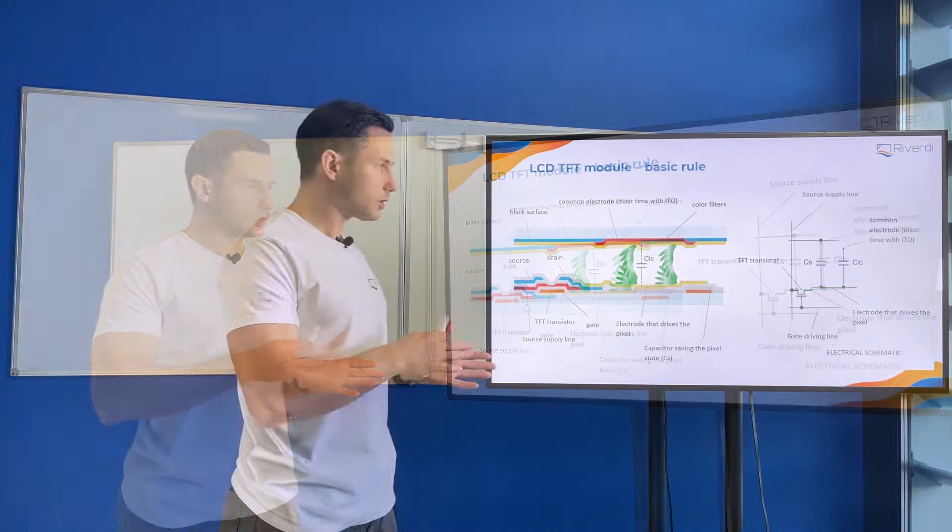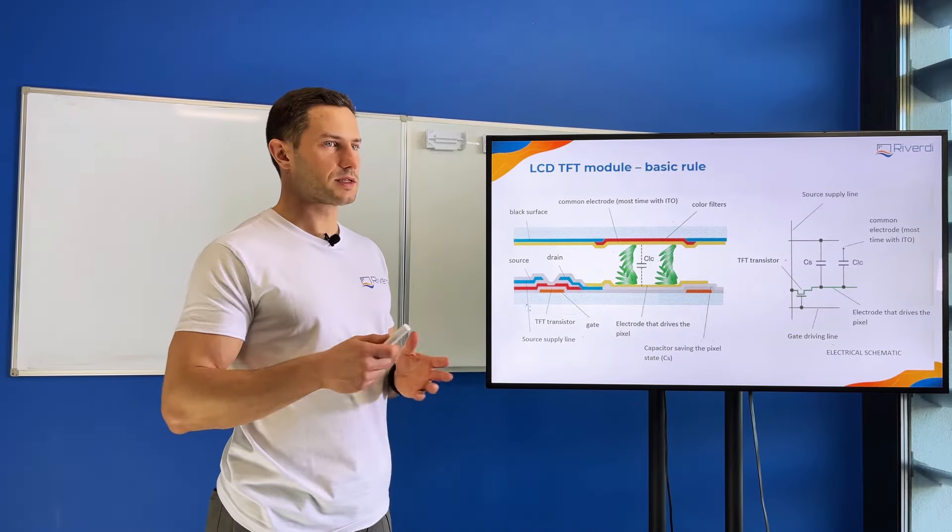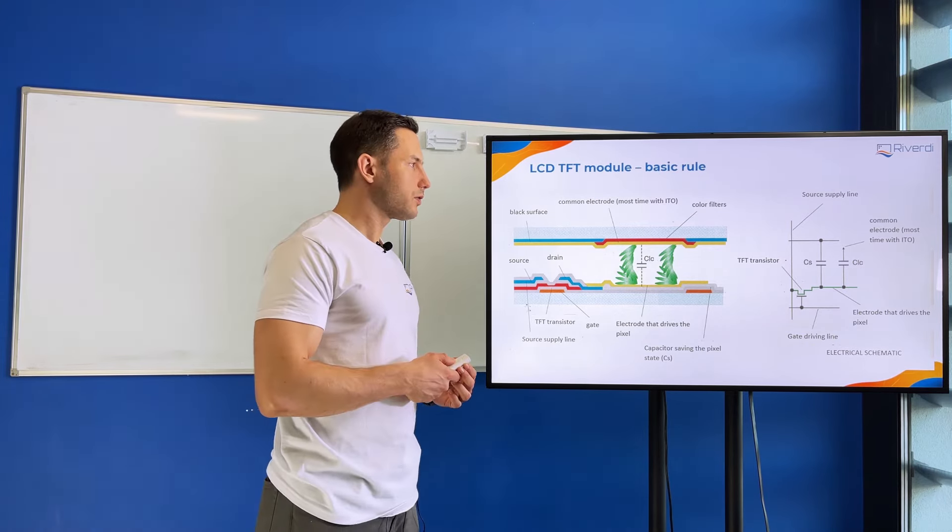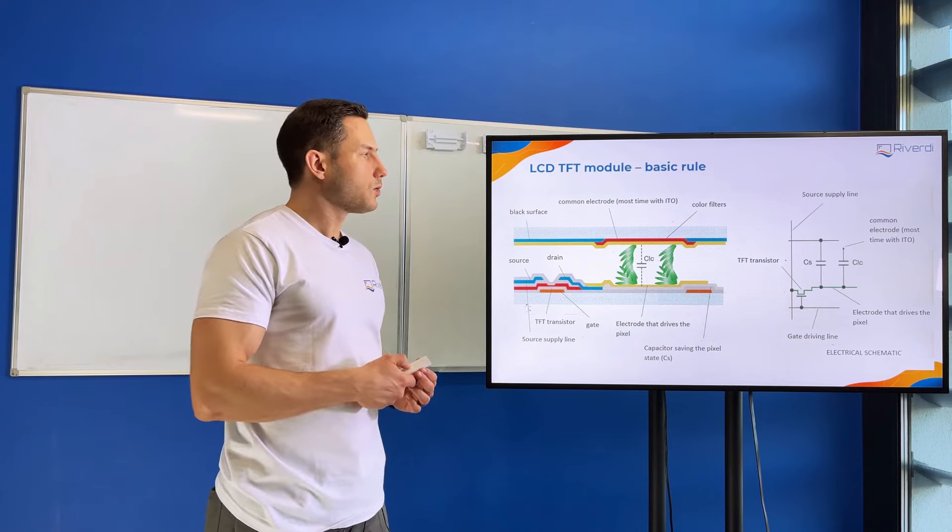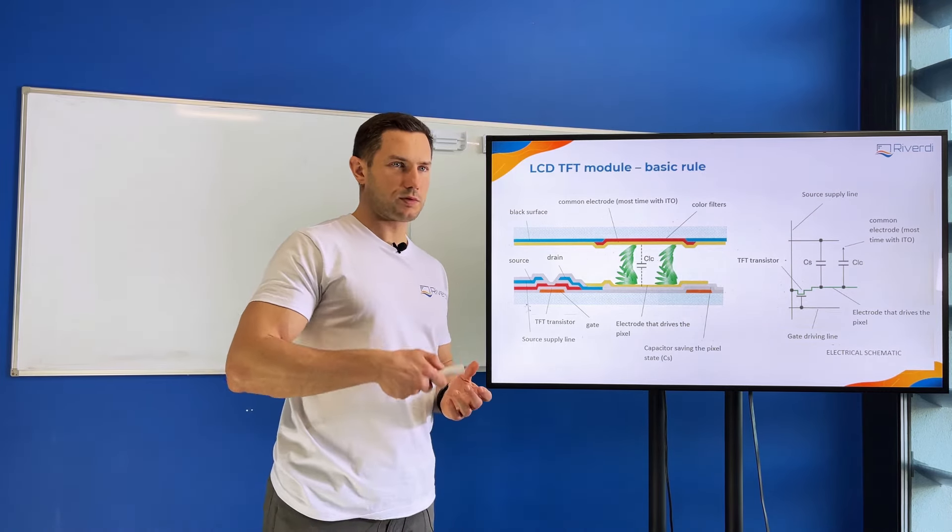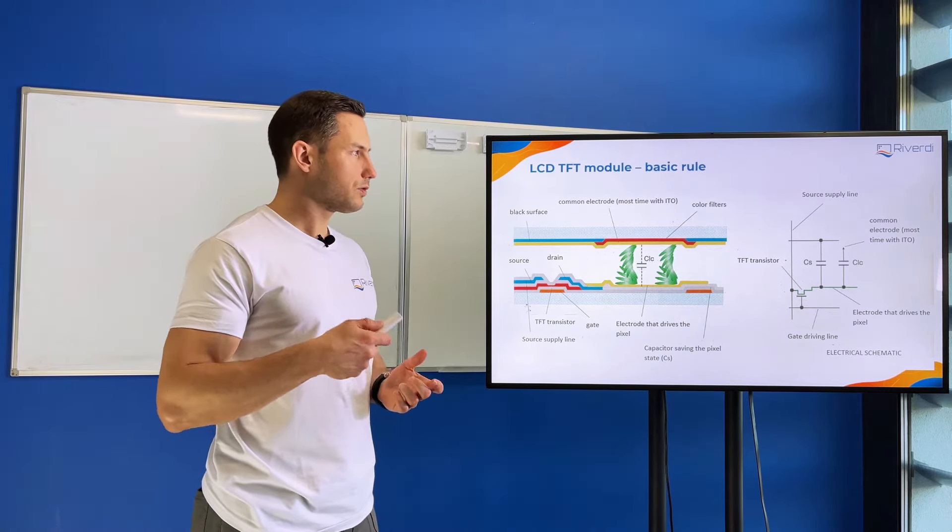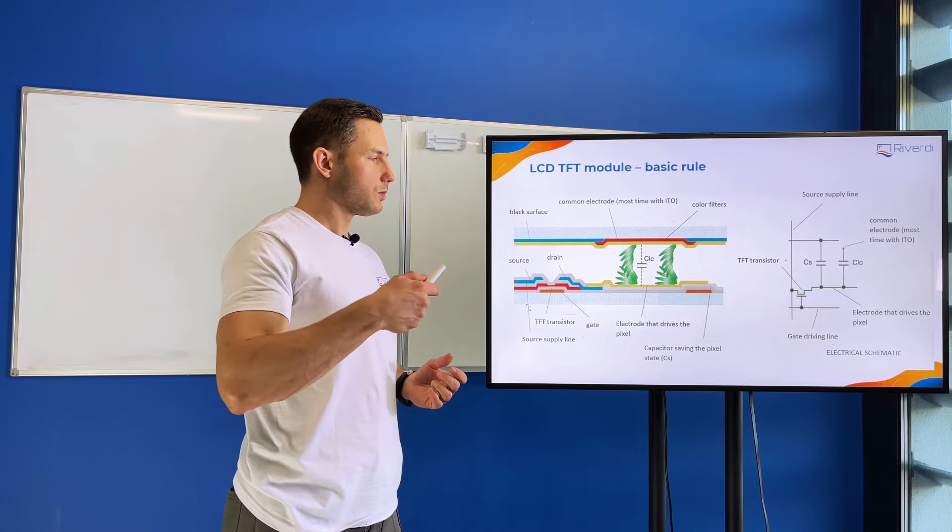So we have 256 steps for the brightness of every subpixel. Because we have three subpixels, we have 24 bits. If we have 24 bits, 2 to the power of 24